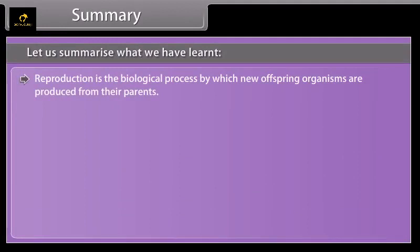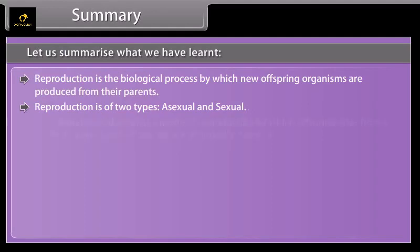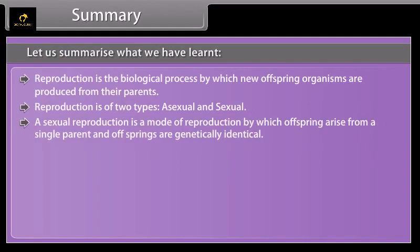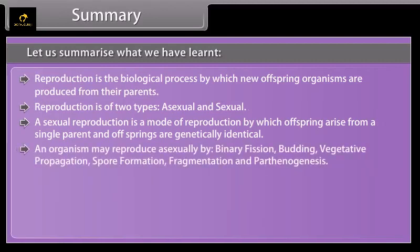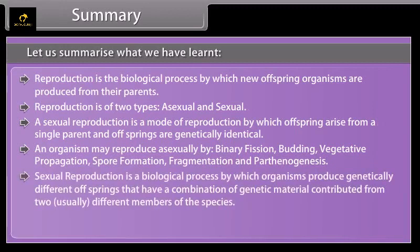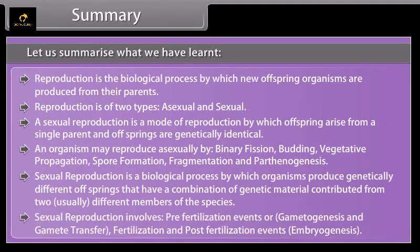Reproduction is the biological process by which new offspring organisms are produced from their parents. Reproduction is of two types: asexual and sexual. Asexual reproduction is a mode of reproduction by which offspring arise from a single parent and are genetically identical. An organism may reproduce asexually by binary fission, budding, vegetative propagation, spore formation, fragmentation, and parthenogenesis. Sexual reproduction is a biological process by which organisms produce genetically different offspring that have a combination of genetic material contributed from two usually different members of the species. Sexual reproduction involves pre-fertilization events — gametogenesis and gamete transfer — fertilization, and post-fertilization events including embryogenesis.